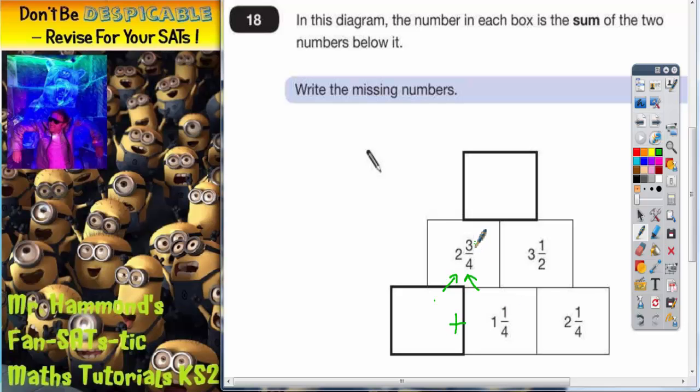that'll be two and two quarters, then take the whole one off, that'll be one and two quarters. So in this box here it's going to be one and two quarters.